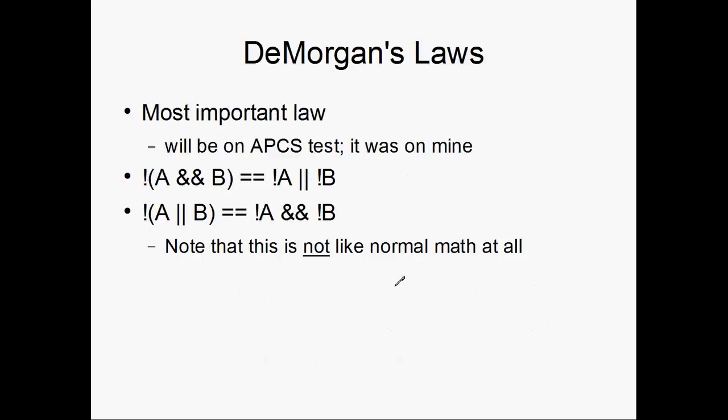Then there's the most important of all, because it gets its own page. This was actually on the AP computer science exam that I took, and it will be on yours, I guarantee it. This is pretty much fundamental to the field. !(A && B) == !A || !B. And the same goes with the ORs. This is not like normal math at all. However, it's pretty intuitive when you think about it. How do we make A && B false? Well, we just have to have A be false or B be false. And how do we have A || B be false? We have to have both A be false and B be false.